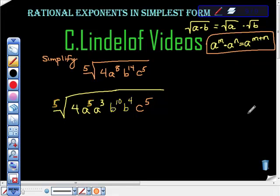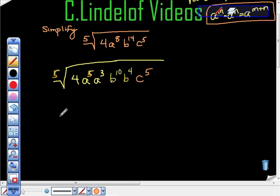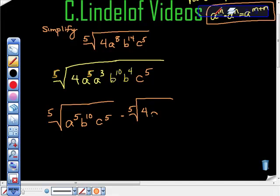I'm going to use that first rule, and then I'm going to start applying this rule. So I'm going to say this. I'm going to say that the fifth root, the fifth root, this root, this root of A to the fifth, I'm taking out all the factors that are divisible by five, A to the fifth, B to the tenth, C to the fifth, times the fifth root of four, A to the third, B to the fourth.